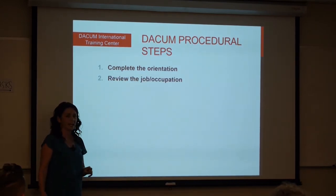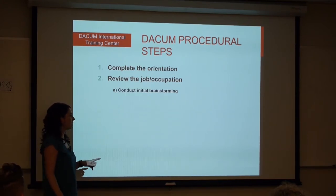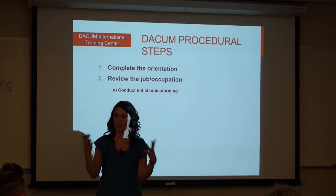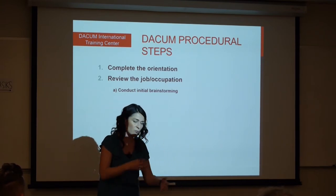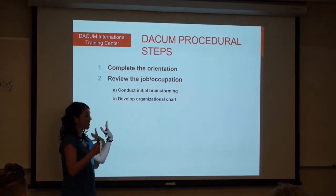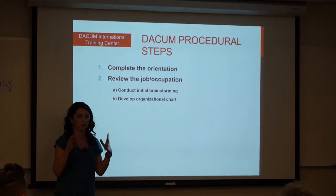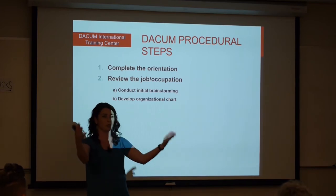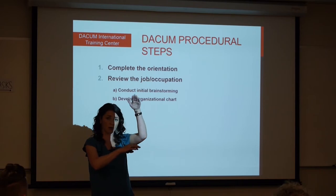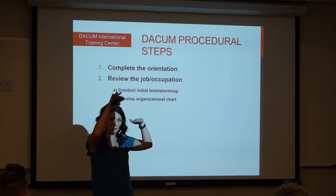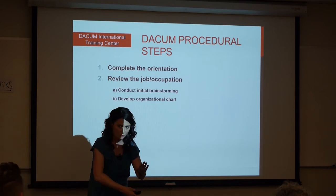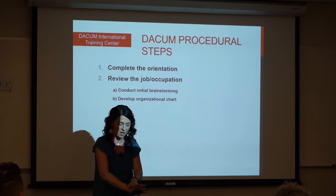And then we're going to get in the zone and we're going to review the whole job. First we'll conduct a whole job brainstorming — we'll get those 55 to 65 initial ideas, what we would see you do on the job, what you think of when you do your work. We'll capture that, and we'll also develop kind of a quick and dirty org chart. We'll put you in the center of the universe, right where you belong. Then we'll take a look at who you report up to — about two levels above you, who manages you — and if you have any support, subordinates, or direct reports, we'll capture that information as well.